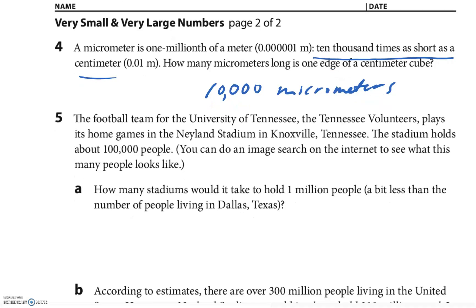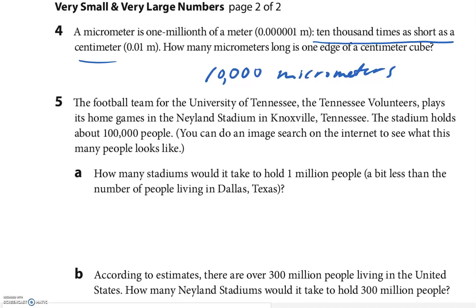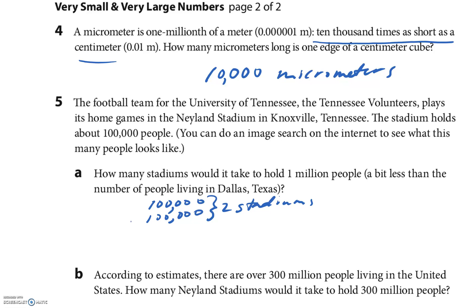The football team for the University of Tennessee — the Tennessee Volunteers — plays home games in Neyland Stadium in Knoxville. The stadium holds about 100,000 people. How many stadiums would it take to hold one million people? One stadium holds 100,000; two stadiums hold 200,000; three stadiums hold 300,000 — so ten of those equal one million. The answer is one million divided by one hundred thousand, which equals ten.